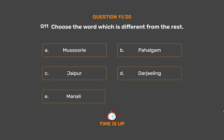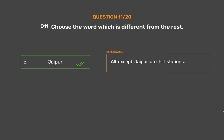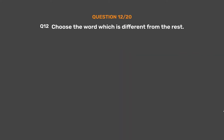The correct answer is Option C: Jaipur. All except Jaipur are hill stations.